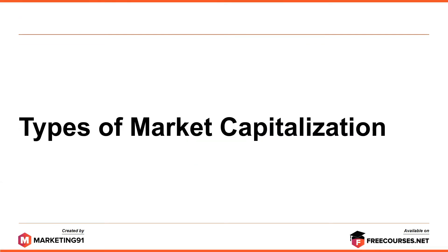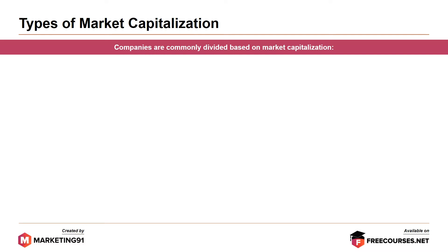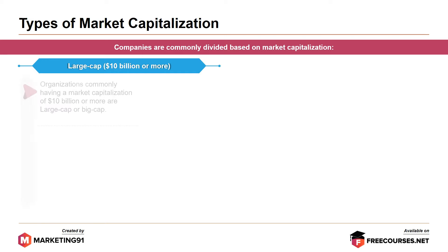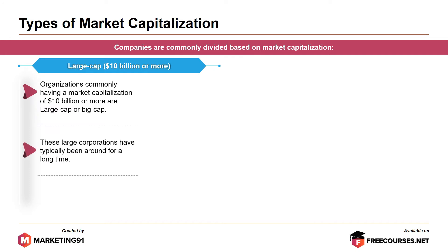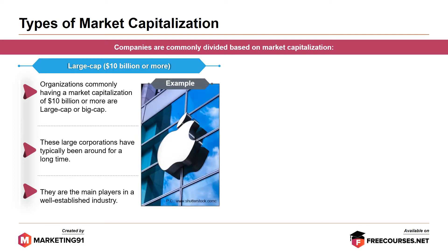Moving on to types of market capitalization. Companies are commonly divided based on market capitalization into three broad classifications. First, large caps — that is, a market capitalization of $10 billion or more. Organizations commonly having a market cap of $10 billion or more are large cap or big cap companies. These large cap corporations have typically been around for some time and are the main players in a well-established industry — for instance, Apple.